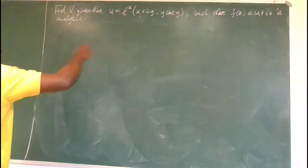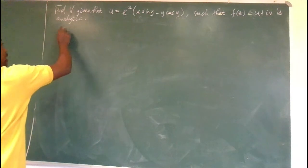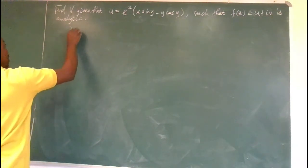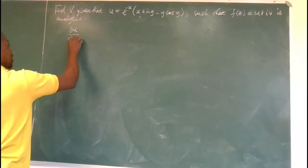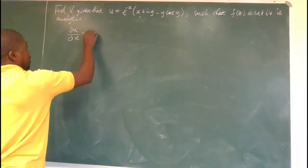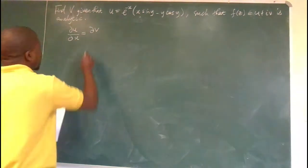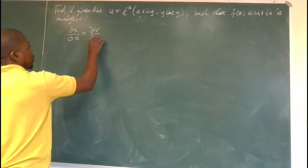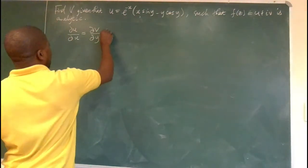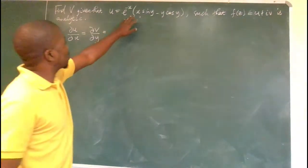If that complex-valued function f(z) is analytic, it means that the partial derivative of u with respect to x should be equal to the partial derivative of v with respect to y. So what we know, we can find the partial derivative of u with respect to x from this expression.